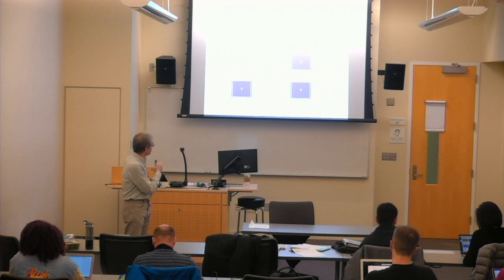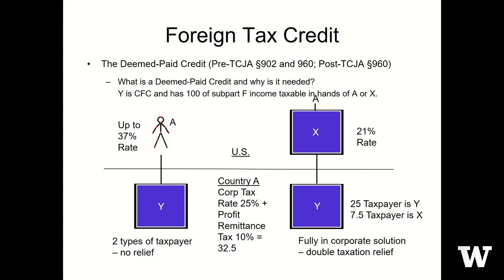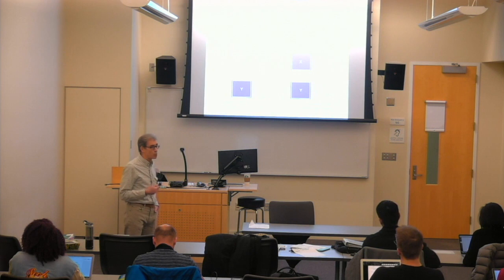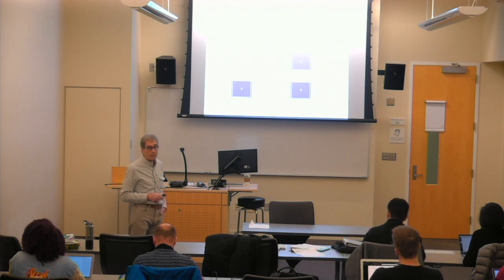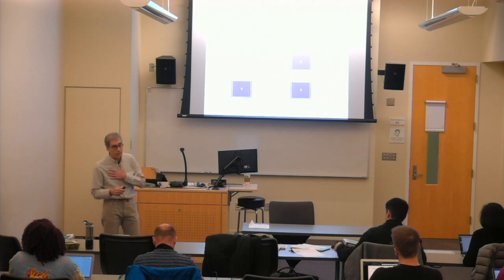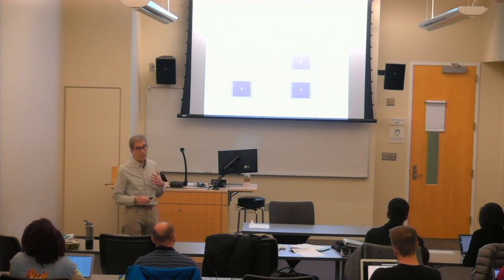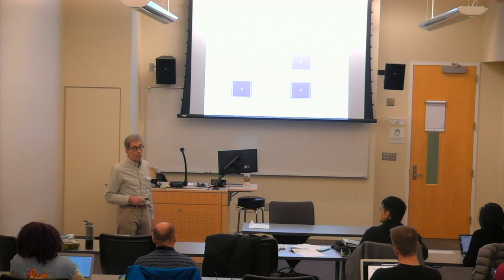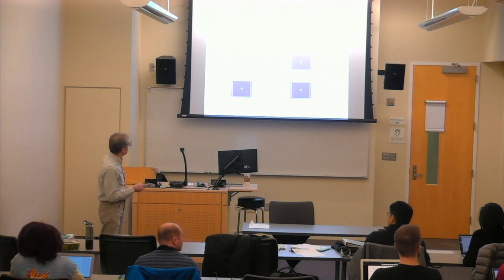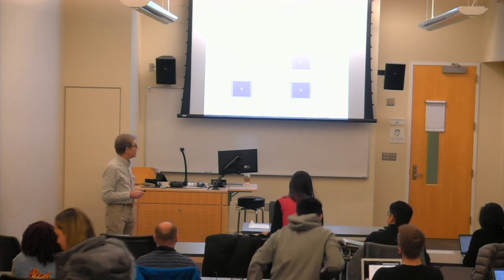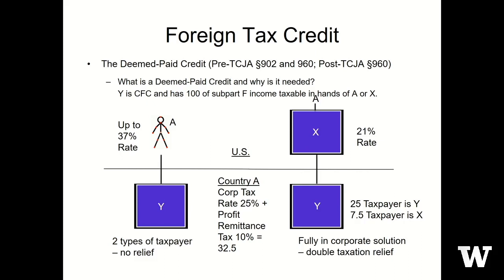Now let's look at these two pictures. On the left, an individual owns a foreign company. On the right, an individual owns X, the US company, and X owns Y, a foreign company. In both examples, Y is subject to a 25% tax rate in Country A, and when Y pays a dividend, it's subject to a 10% withholding tax. The individual on the left — call them A — will eventually receive a dividend.